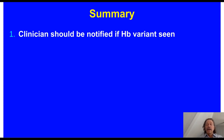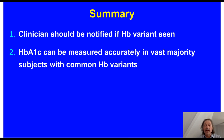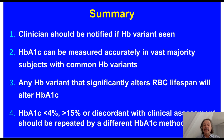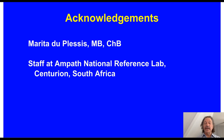To summarize: clinicians should be notified if a hemoglobin variant is seen, because often with heterozygous variants, neither the patient nor the doctor knows. Hemoglobin A1c can be measured accurately in the vast majority of subjects with common hemoglobin variants. Any hemoglobin variant that significantly alters red cell lifespan will alter hemoglobin A1c. Finally, if the hemoglobin A1c is less than 4%, more than 15%, or discordant with the clinical assessment, it should be repeated by different hemoglobin A1c methods. I'd like to acknowledge Marita Duplessis and the staff at AMPATH's National Reference Lab in South Africa. Thank you.